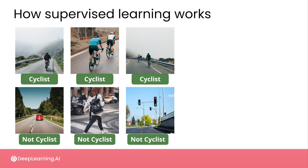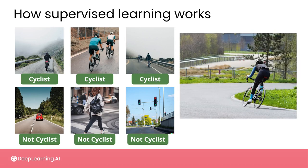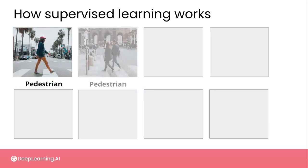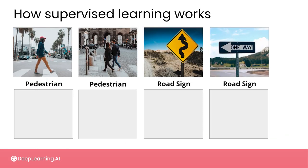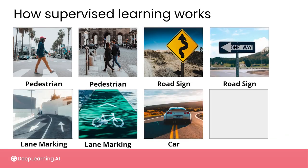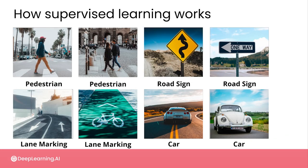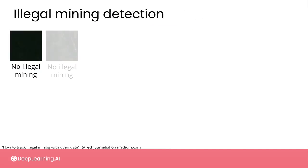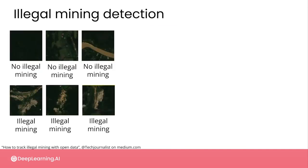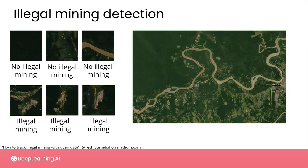Once you have shown your algorithm a large number of examples of cyclists and not cyclists, it will begin to be able to identify cyclists in images it has never seen before, based on the patterns it has observed in the labeled examples. You could also train your algorithm to recognize pedestrians, road signs, lane markings, and other cars if you're working on self-driving cars. Similarly, you could show your algorithm thousands of examples of satellite images that contain evidence of illegal mining operations and train it to automatically recognize this activity in previously unseen images.